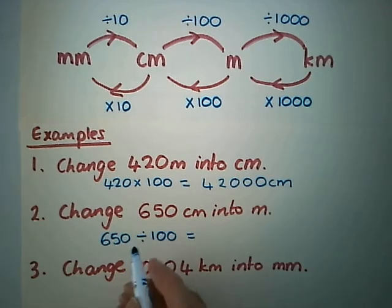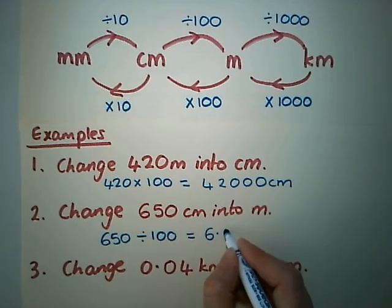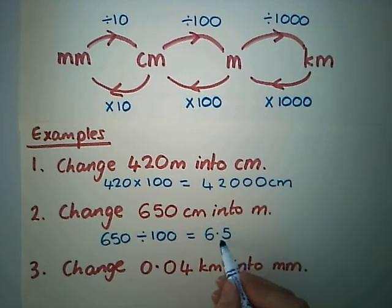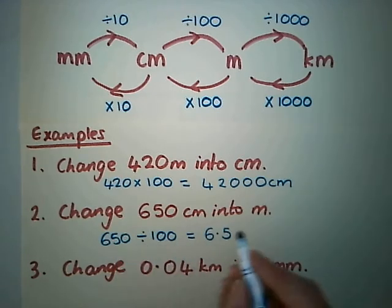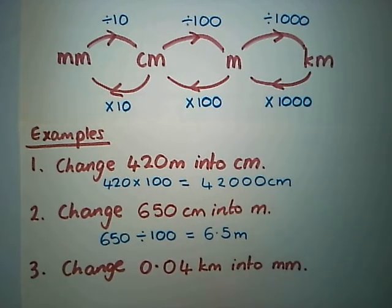If there's no decimal, it's at the end. When dividing by 100, the numbers become smaller by two places. Imagine the zero and the five jumping over the decimal point. So the answer is 6.5 meters. You don't need to say 6.50.